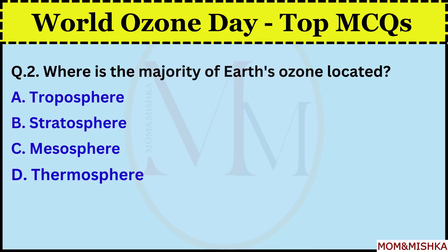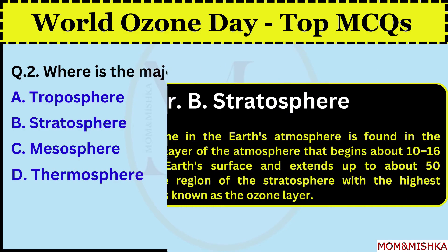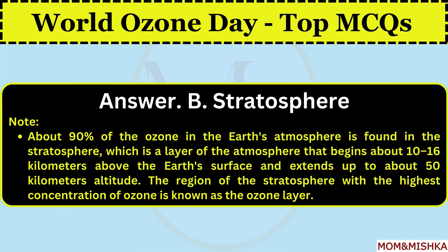Where is the majority of Earth's ozone located? In the stratosphere. Option B. About 90% of the ozone in the Earth's atmosphere is found in the stratosphere, a layer that begins about 10–16 km above the Earth's surface and extends up to about 50 km altitude. The region with the highest concentration of ozone is known as the ozone layer.